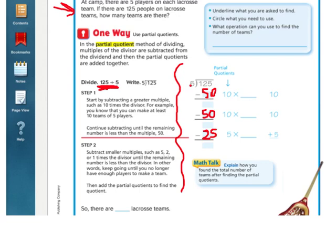I know that 5 fits into 50, 10 times. So if I subtract 50 from 125, I will get 75. And then if I subtract 50 again, I'll get 25. And if I subtracted in my last 25, I'll get 0.